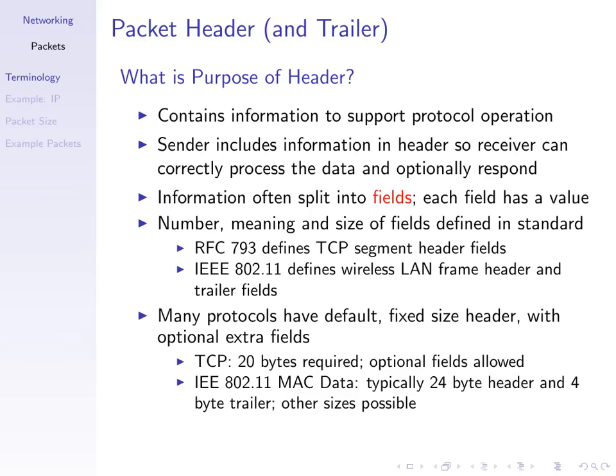A packet contains a header, payload, and trailer. The purpose of the header and trailer is that they contain some extra information — not the actual data — to help the protocol work correctly. This depends upon what the purpose of the protocol is. For example, an application layer protocol supporting web browsing may include information about the web browser or the request being made, while a wireless LAN data link layer protocol may include MAC addresses. The sender includes information in the header so the receiver can correctly process the data and, when needed, respond correctly.